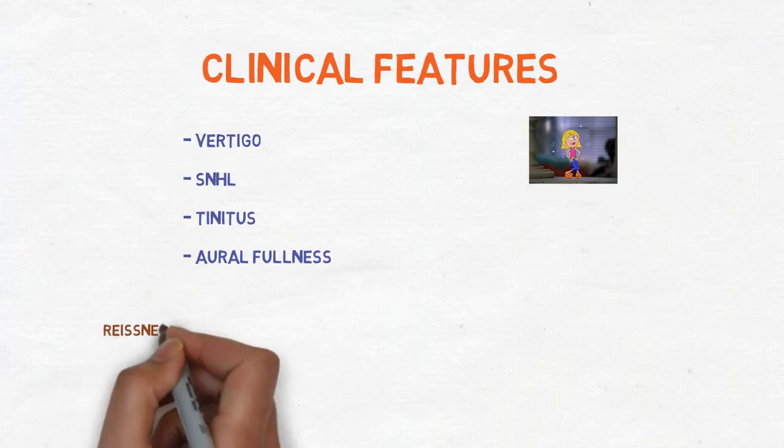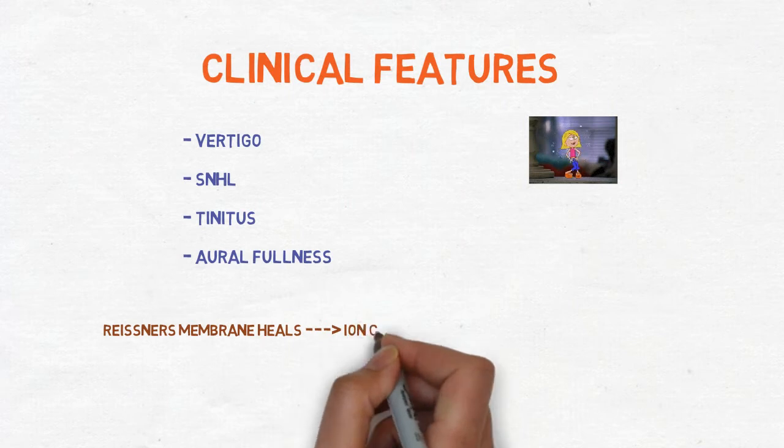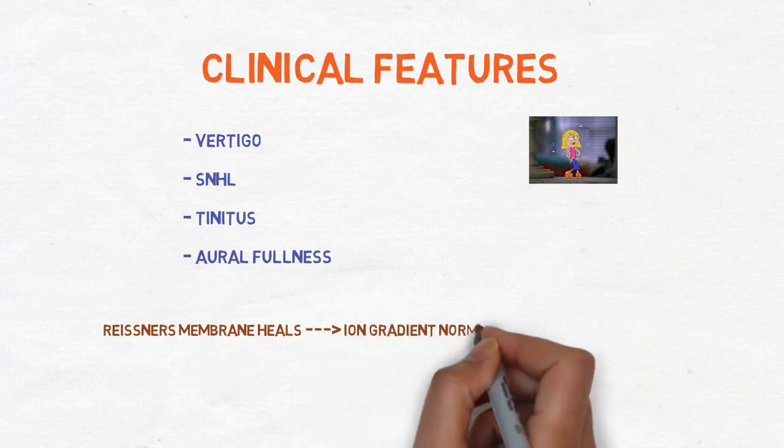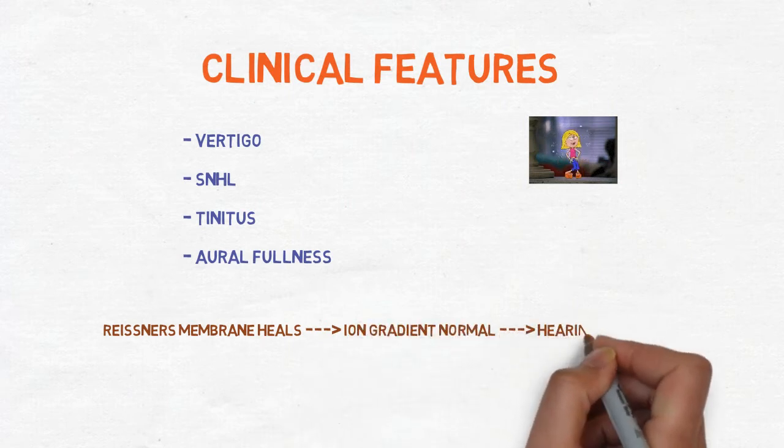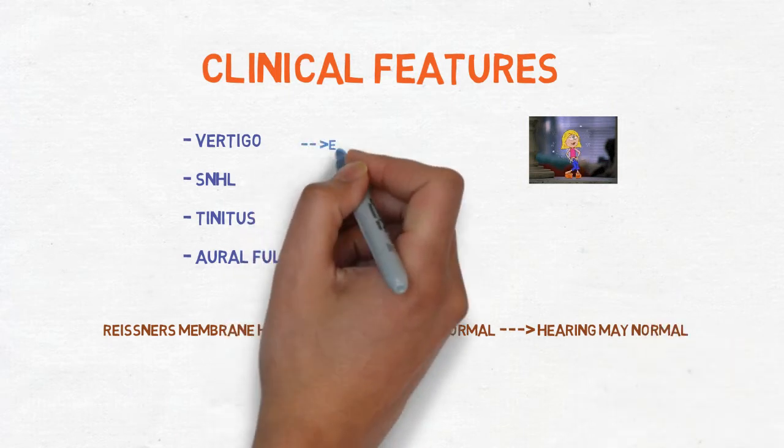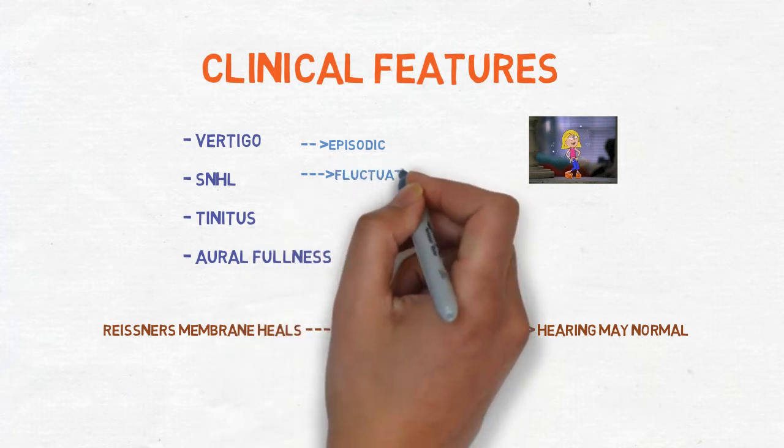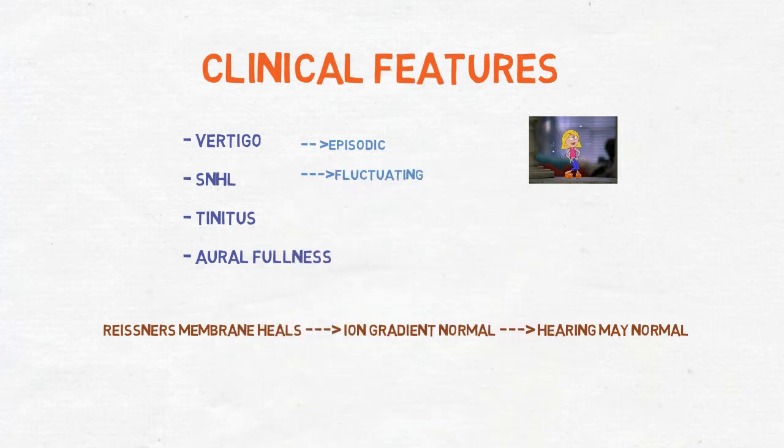After some time the Reissner's membrane heals and due to this the ion gradient returns to normal. That's why hearing comes to normal. Potassium restores in endolymph. The vertigo may be normal and that's why we can say that there is episodic vertigo or fluctuating sensory neural hearing loss.